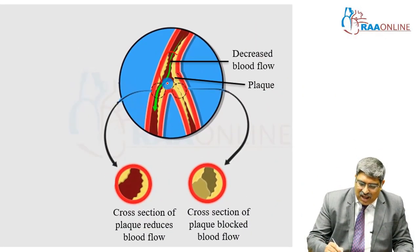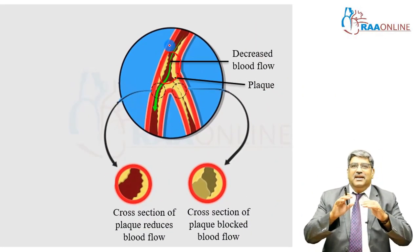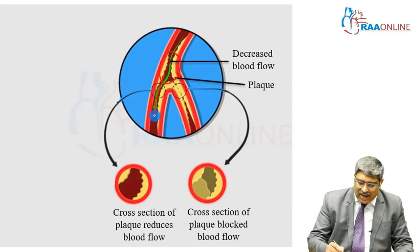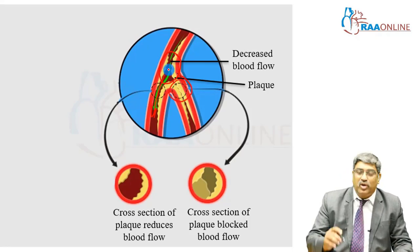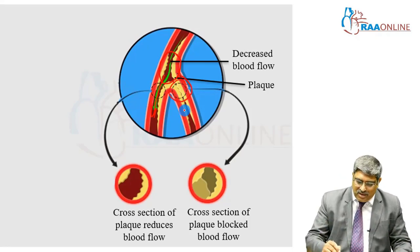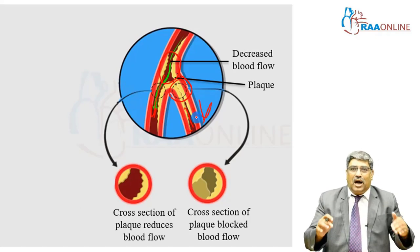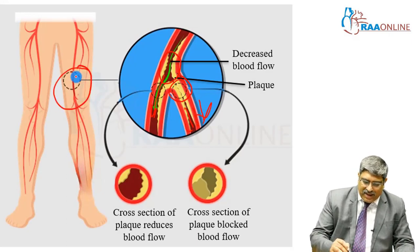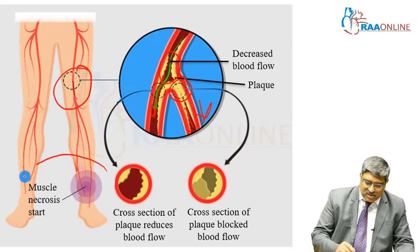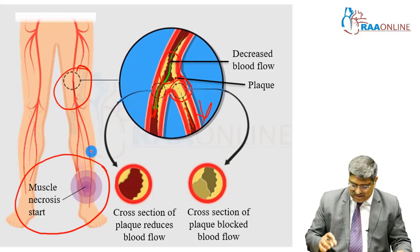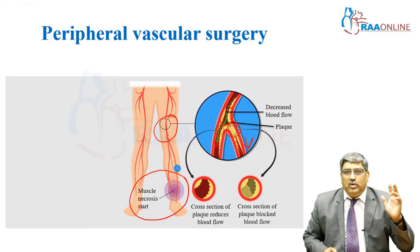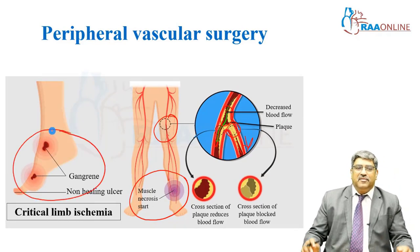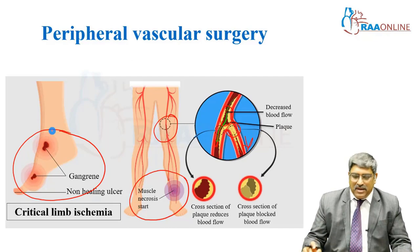You might have atherosclerotic disease in the distal part of the femoral or popliteal artery. So your vascular lumen is compromised or totally occluded, so that the blood supply to the lower part of the obstruction is not there. When the blood supply is compromised, your muscle is going to be in danger. Muscle necrosis starts, and if you allow the ischemia to prolong, there can be gangrene and non-healing ulcer, which is called critical limb ischemia.